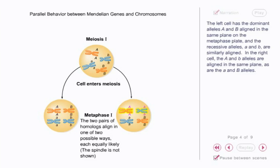In the right cell, the big A and little b alleles are aligned in the same plane, as are the little a and big B alleles.